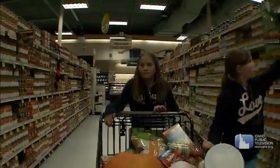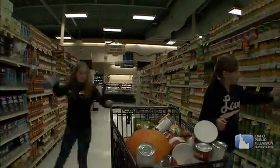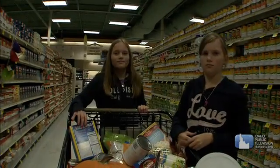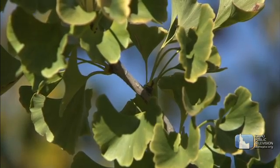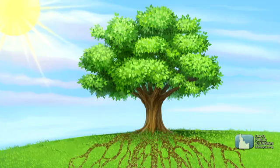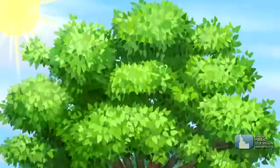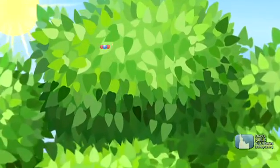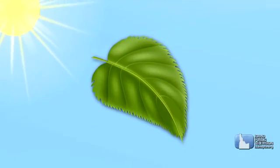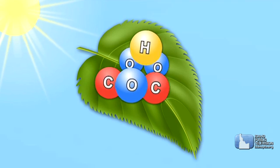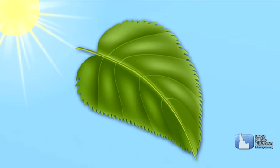Like you, trees need food — except that trees make their own food. They use a process called photosynthesis. Water and nutrients are sent up from the roots to the leaves. The leaves take in carbon dioxide from the air, using energy from the sun, and combine the water and carbon dioxide to make sugars that the tree uses to feed itself.